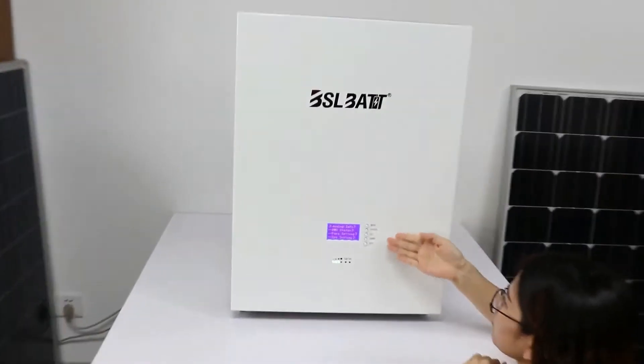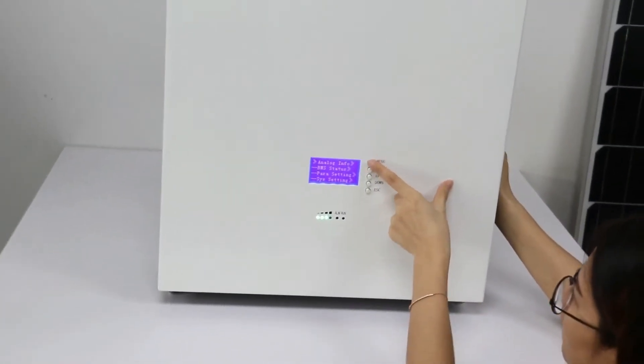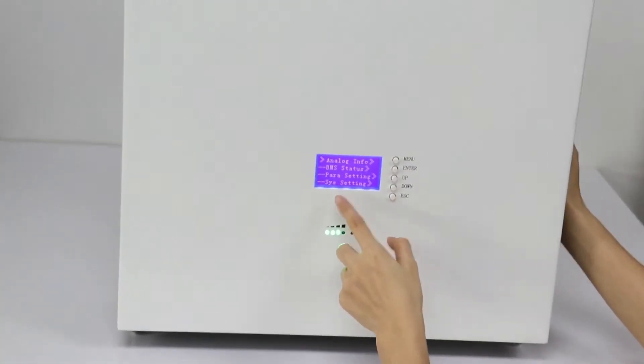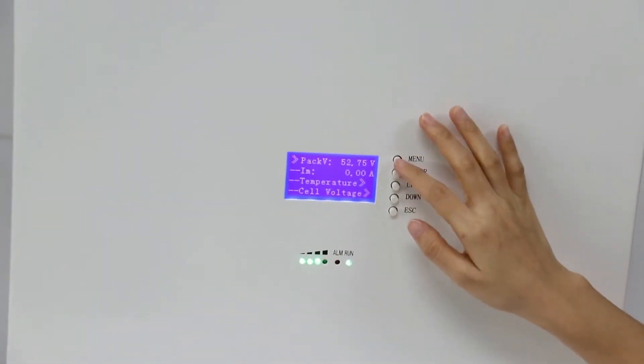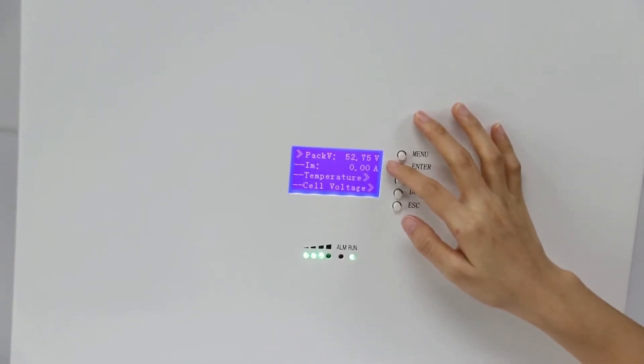Let us show you the screen of the batteries. When you press the menu button, you can see the BMS and also the system settings. Here you can see the battery pack voltage. The data shows 52.75 voltage.